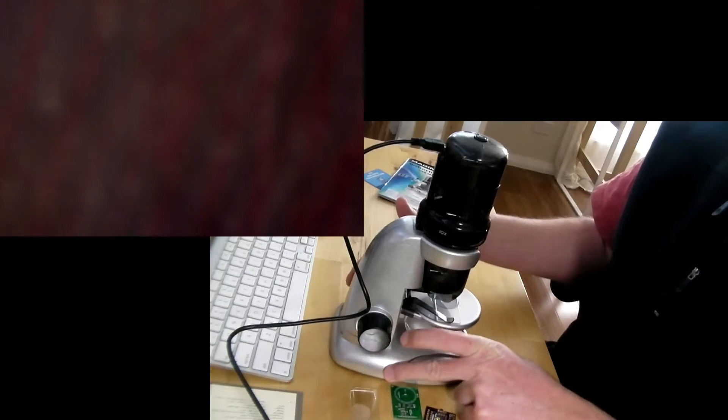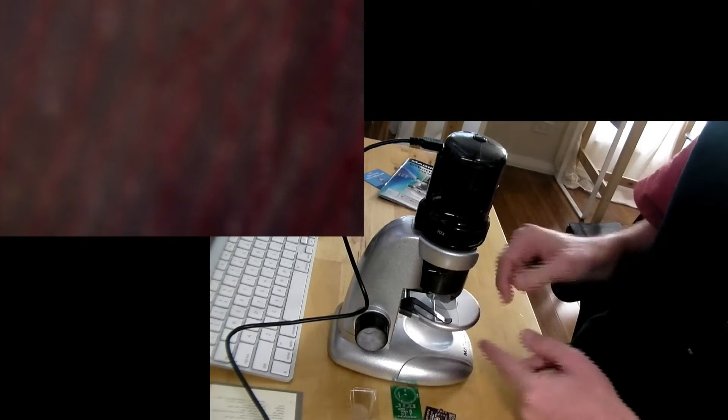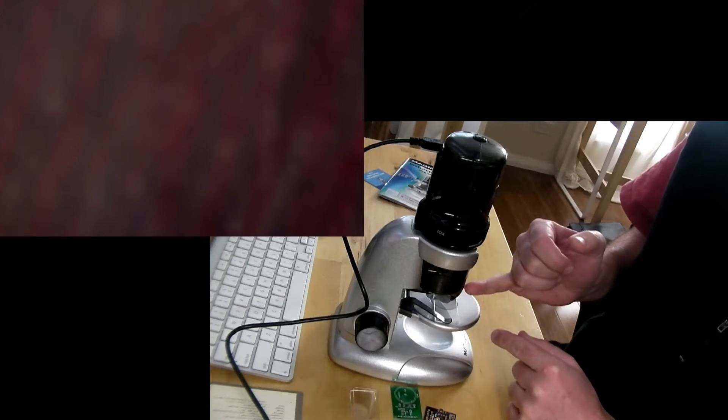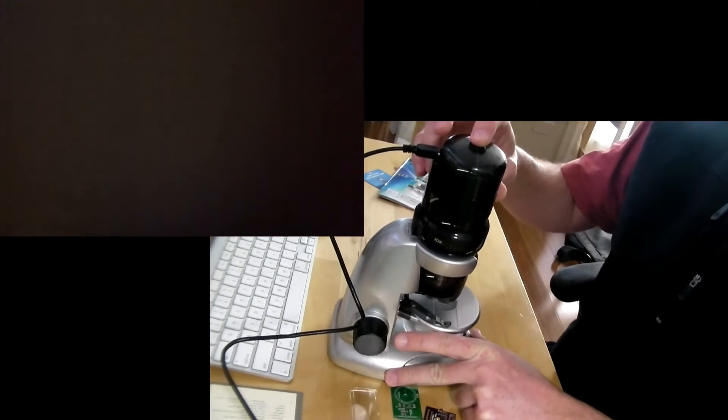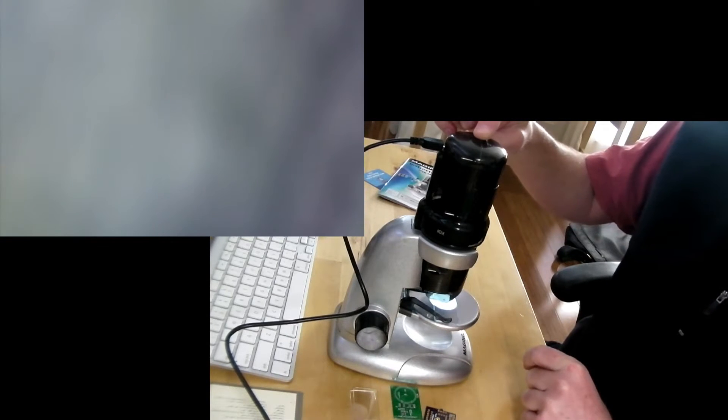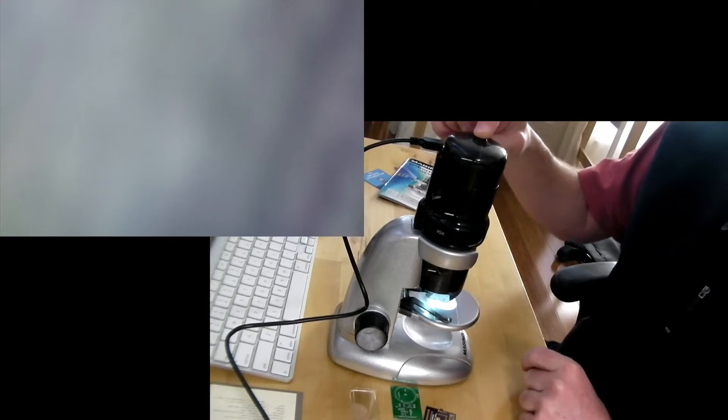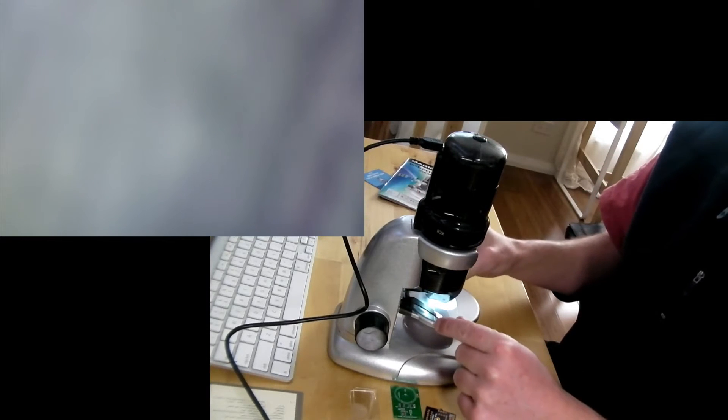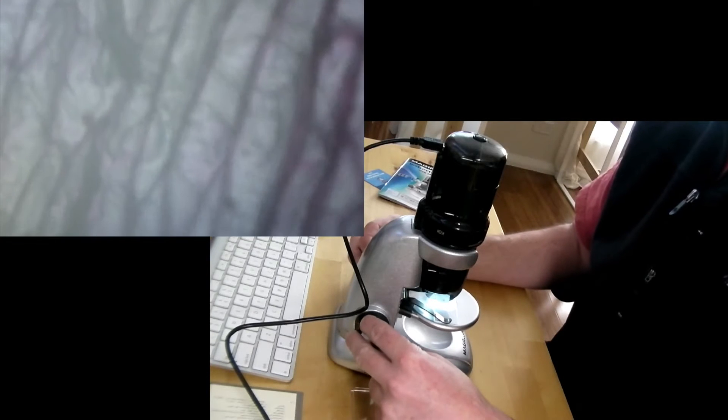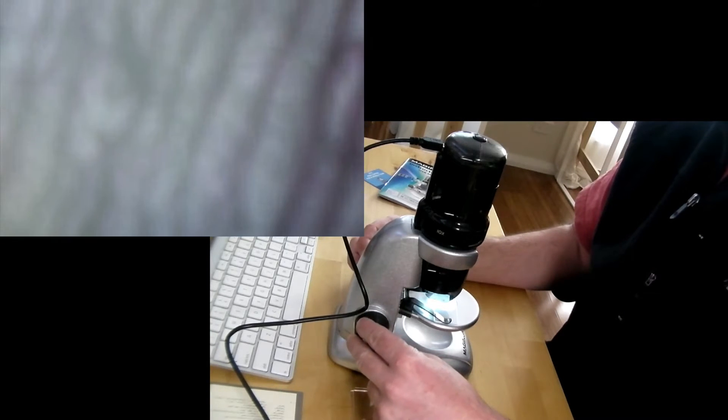The microscope comes with two light sources. There's one at the bottom part of the microscope where the slide is, and there's also one on the top right next to the sensor. There's a button up here. I can press this button and I can alternate between each one of those light sources, or I can have both of them turned on. I'll try to do this with both turned on. I'm going to turn the dial here to gain some focus. There you go. There's the onion.